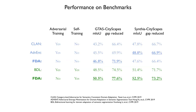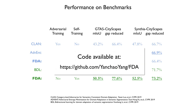Despite its simplicity, FDA is competitive with methods performing complex adversarial training. With self-training, FDA surpasses the state-of-the-art in unsupervised domain adaptation benchmarks for semantic segmentation.